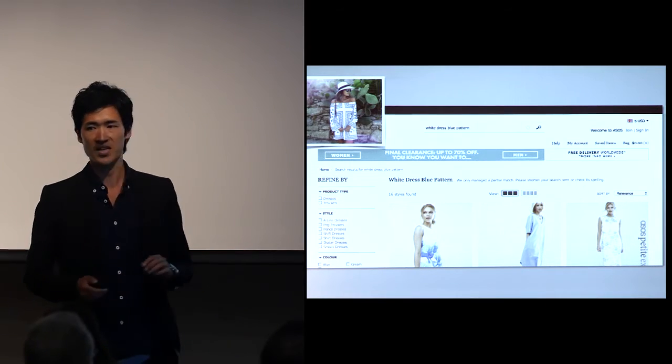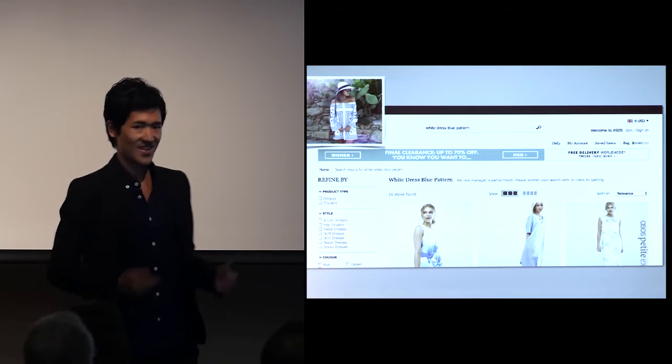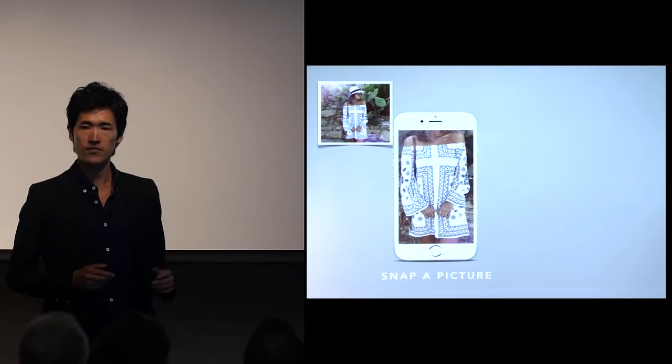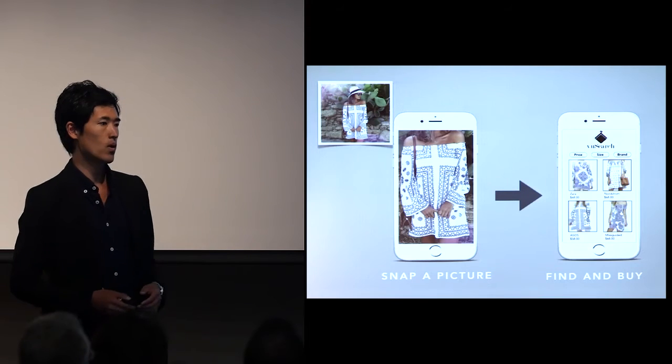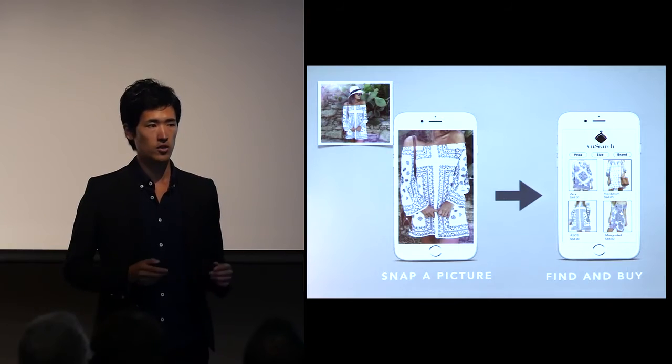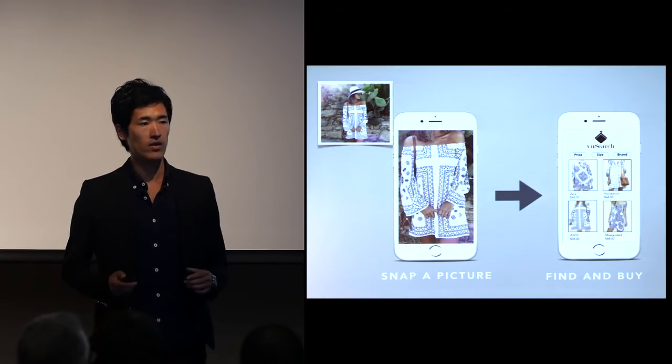I hate wasting my time like this. I'm a busy person. So instead of struggling with finding the right keyword, wouldn't it be easier if you could just take a picture of what you're looking for and someone else is going to find the item for you? ViewSearch lets you do that. With ViewSearch, you can simply snap the image of what you're looking for and our algorithm is going to match your photo to our 5 million product images in our database.